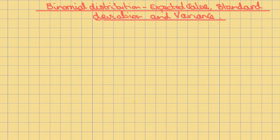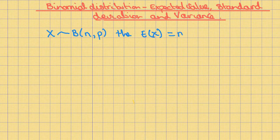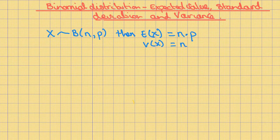Binomial distribution: the expected value, standard deviation and variance. If a random variable X belongs to a binomial distribution with number of trials N and probability of success P, then the expected value of X is equal to NP, and the variance of X is equal to NPQ, where Q is the probability of failure.